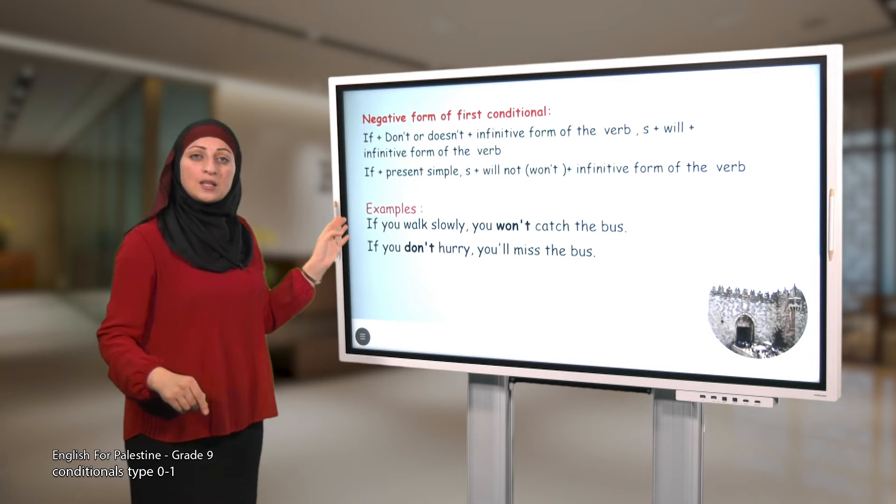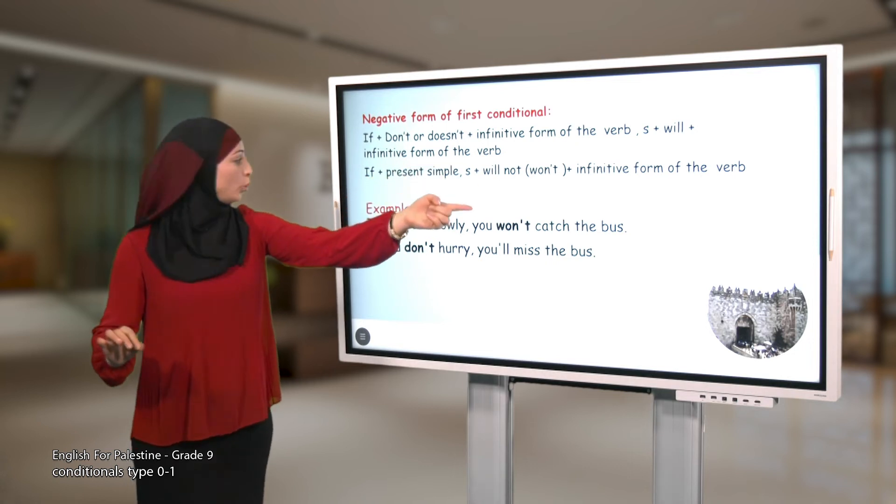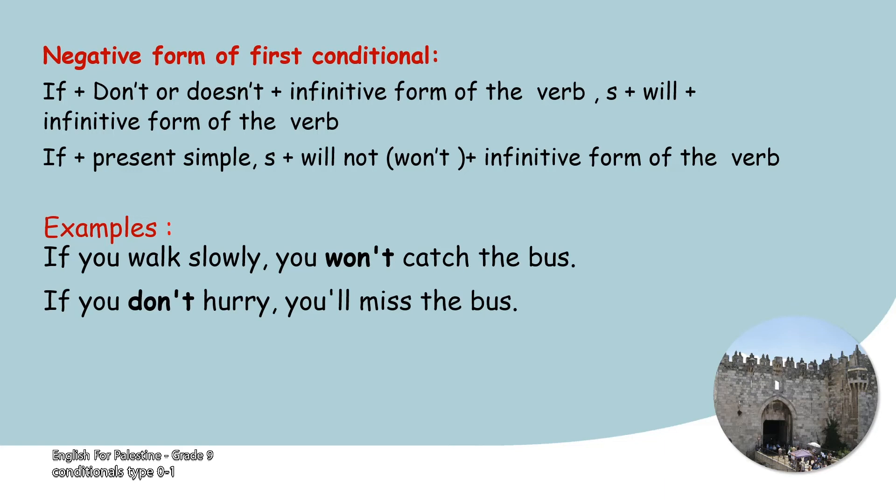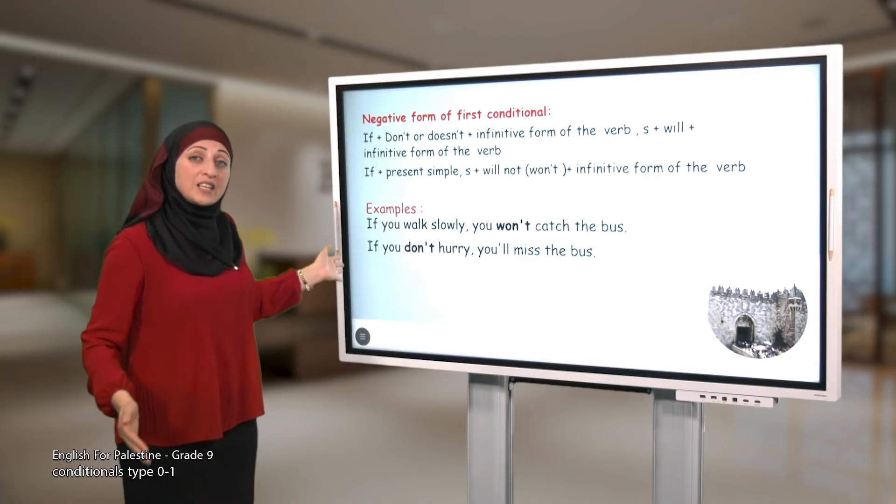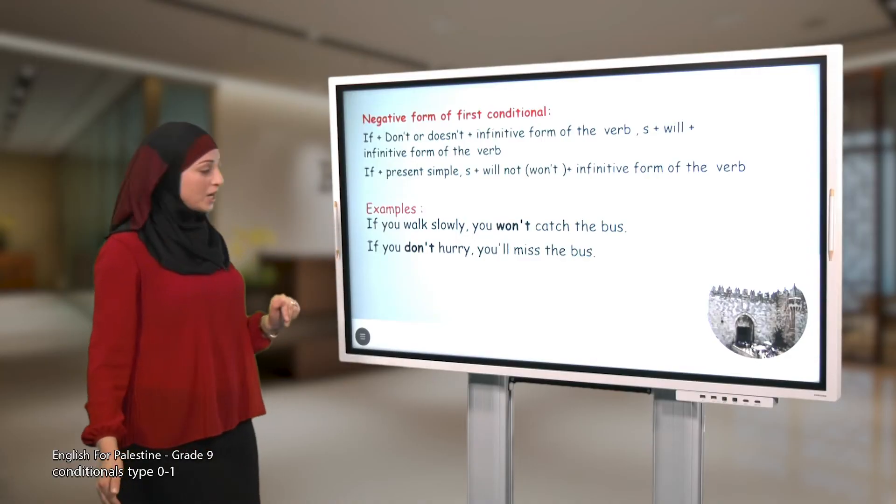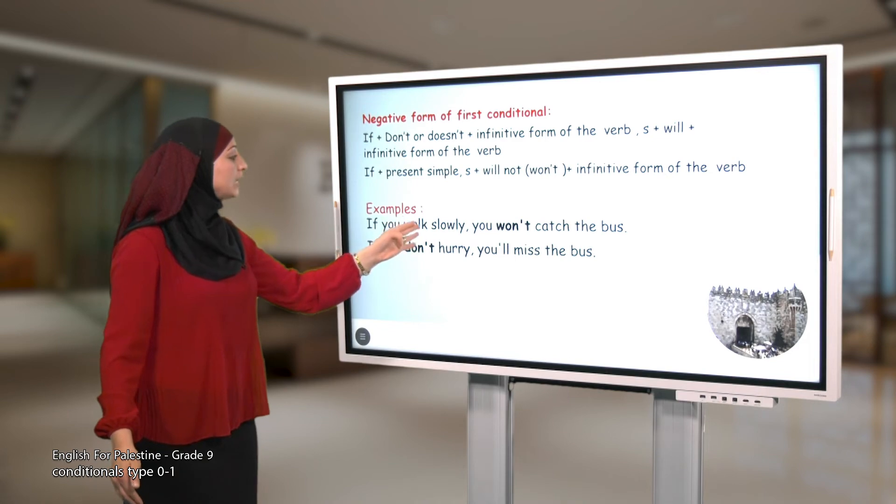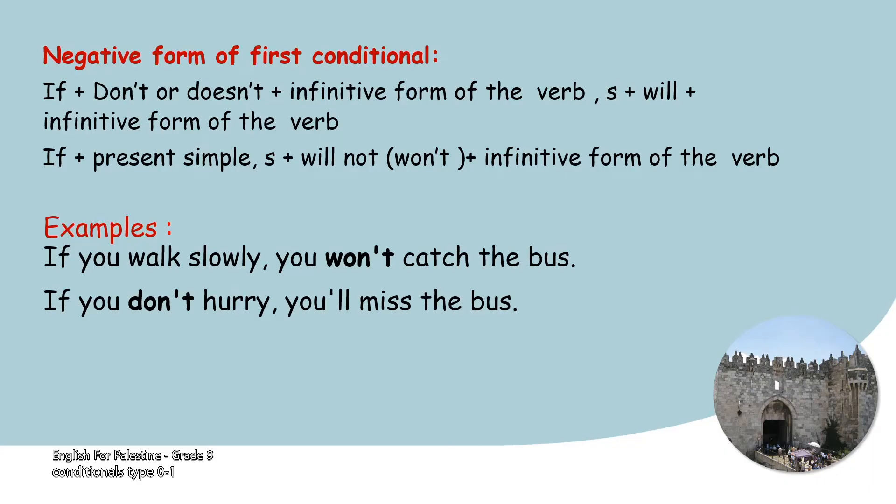If I want to negate the main clause, I will follow this rule: if plus present simple, comma, subject plus will not plus infinitive form of the verb. I have examples here. Please concentrate. If you walk slowly, you won't catch the bus. Here I negate the main clause. Sentence number two: If you don't hurry, you will miss the bus. Here I negate the if clause.